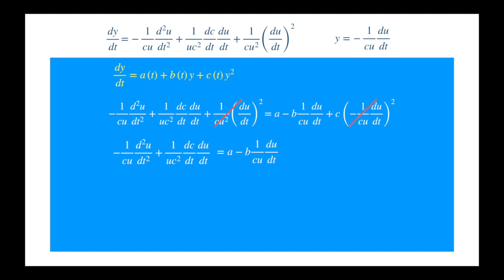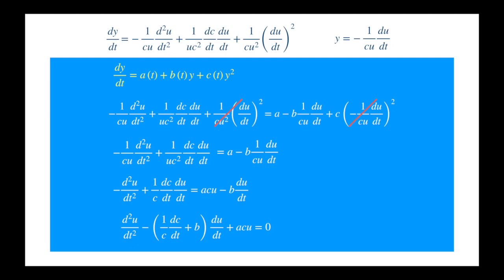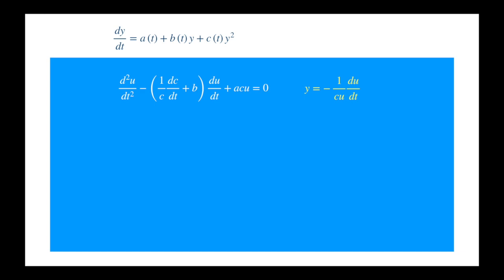Now let's bring down the Riccati equation momentarily so that we can substitute the expression for y and the derivative of y in terms of u, the new dependent variable. So the square terms cancel as expected, and the equation simplifies. We can multiply by cu to get the result, then shift terms to the left-hand side and combine the du/dt terms. So the equation has been transformed from first order nonlinear to second order linear. Depending on the values of a, b, and c, one can solve this equation, and using the inverse of this transformation function, one can go from this linear equation to the Riccati equation.